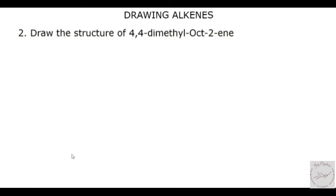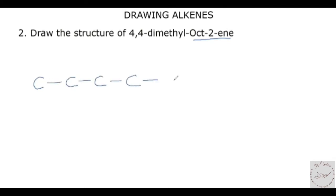The second question says to draw the structure of 4,4-dimethyl-oct-2-ene. The first thing we need to look at is the root. Oct is telling us that there are 8 carbons in this compound, so we draw out all 8 carbons: 1, 2, 3, 4, 5, 6, 7, 8.